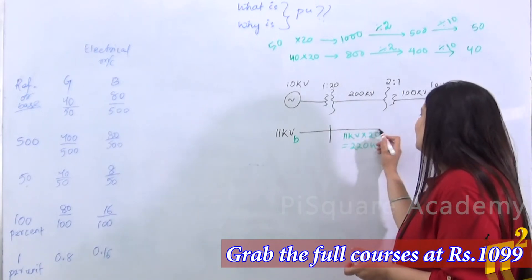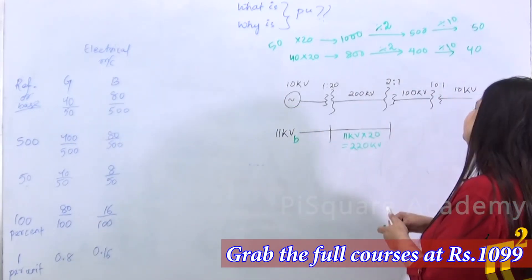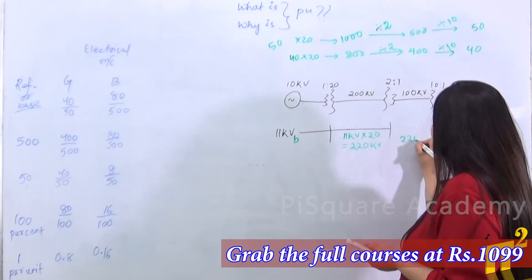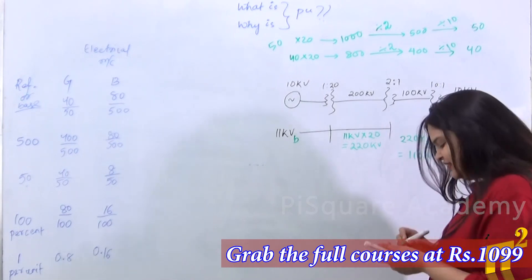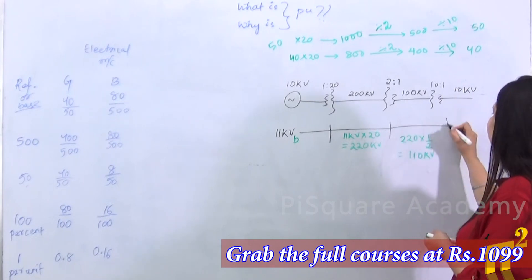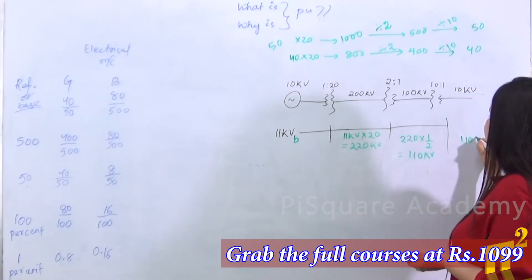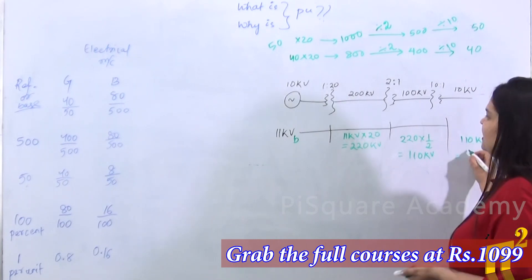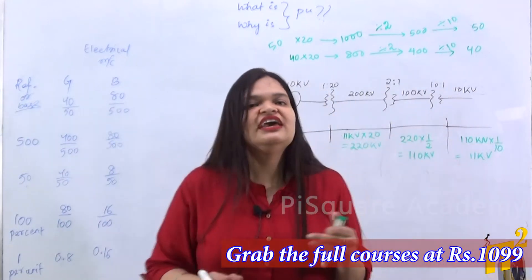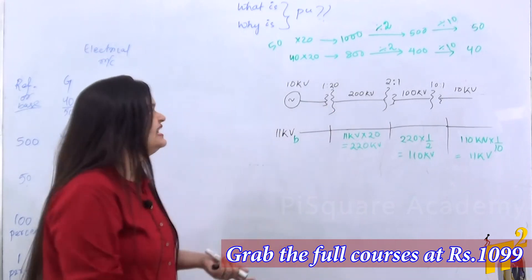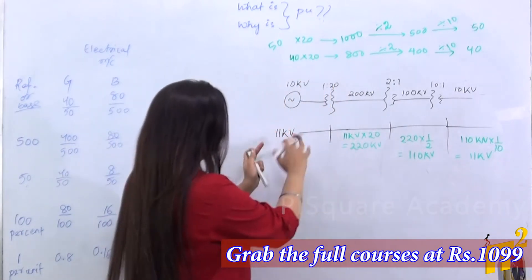Now we use another transformer stepping down by 2: 220 kV × 1/2 = 110 kV. Then we have the last transformer stepping down by 10: 110 kV × 1/10 = 11 kV — which was our original base. So any base you choose, whether 11 kV or 22 kV, you always have to consider the scaling factor and range back to it through the transformer ratios.